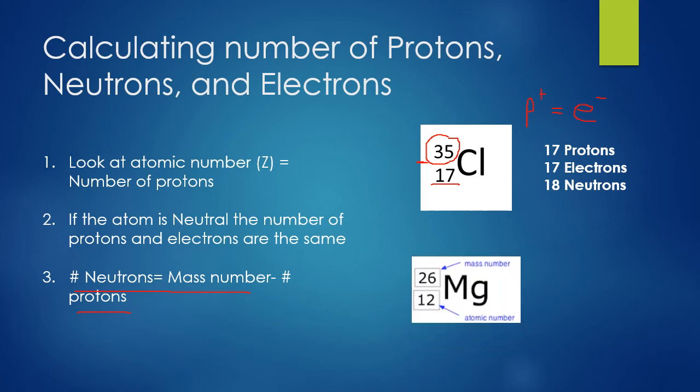Here's another example with a nuclide symbol for magnesium. We have a mass number of 26 and an atomic number of 12. The atomic number is the number of protons. Since it's a neutral atom, we also have 12 electrons. To calculate the number of neutrons, simply subtract the number of protons from the mass number: 26 minus 12 gives 14 neutrons.